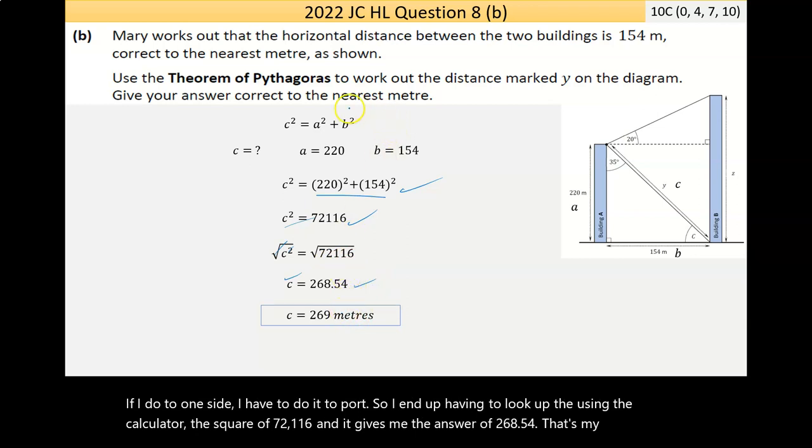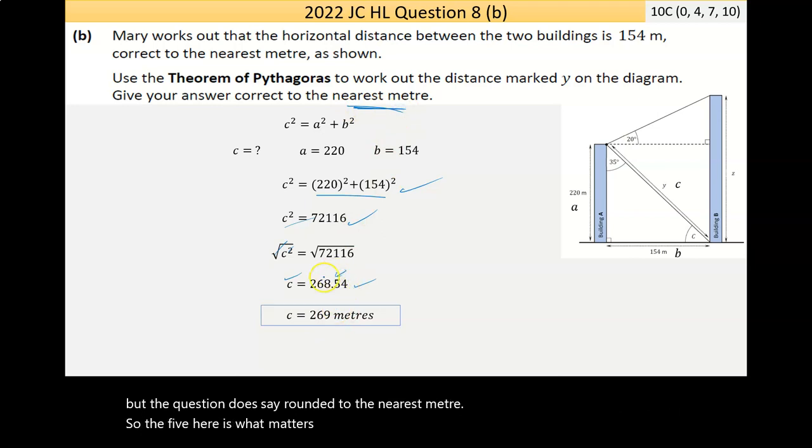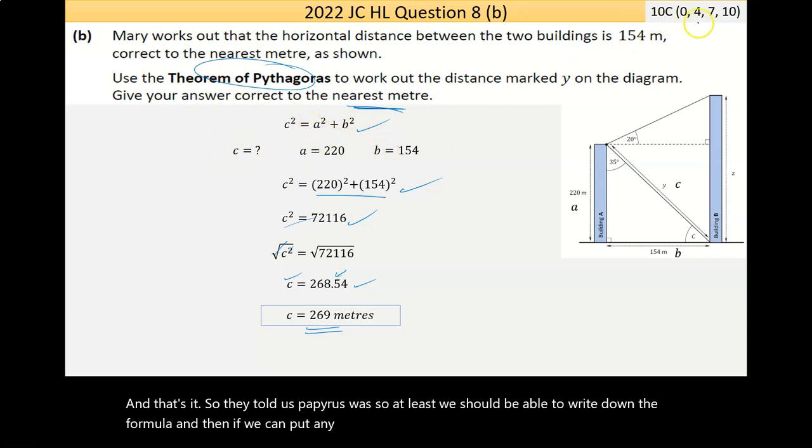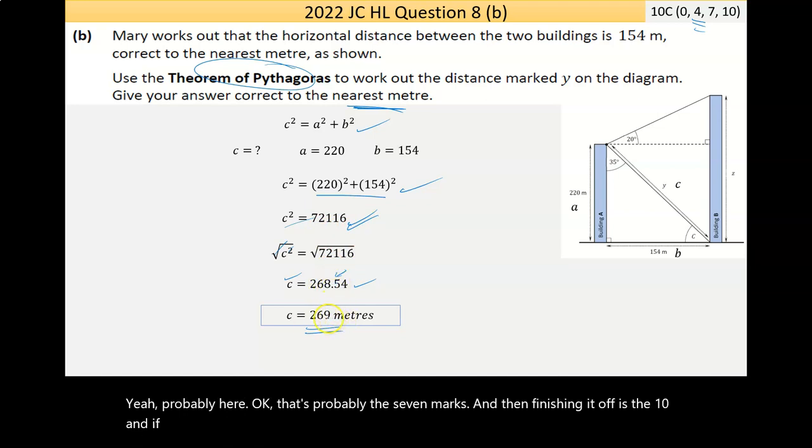That's my hypotenuse, but the question does say rounded to the nearest meter. So, the 5 here is what matters. 5 and greater than the number before it goes up by 1, so I get the 269 meters. And that's it. So, they're told us what Pythagoras was. So, at least we should be able to write down the formula. And then, if we can put any number in, you're going to be jumping up here to the 4 marks. Now, we want to be trying to get up to the 10, because if you can sub them in, then this calculator will work. It should end up here. That's probably the 7 marks. And then, finishing it off is the 10, and if you don't round it, you get the ducted 1 mark from 4 marks.